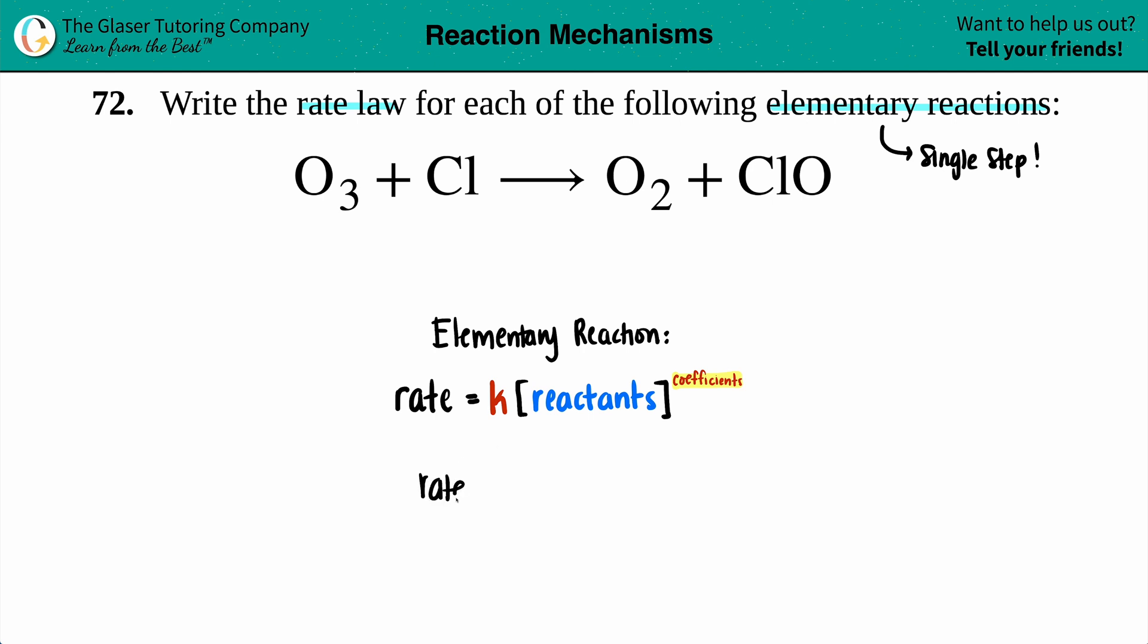Rate equals k, the rate constant, times the concentration of the reactants. In this case we have O3, so let's write down O3. And the other reactant we have is Cl, so I'm going to write that down.